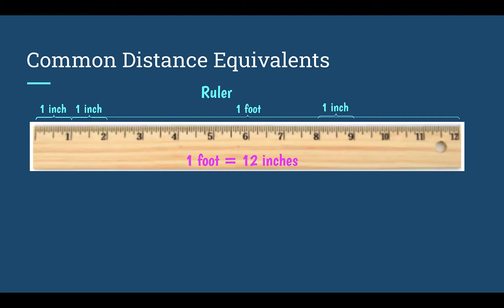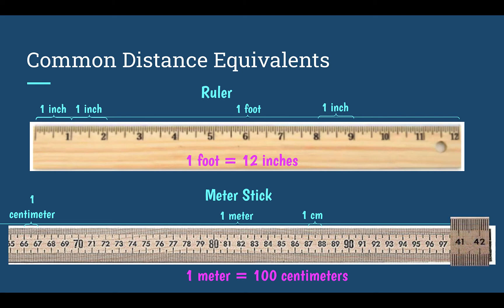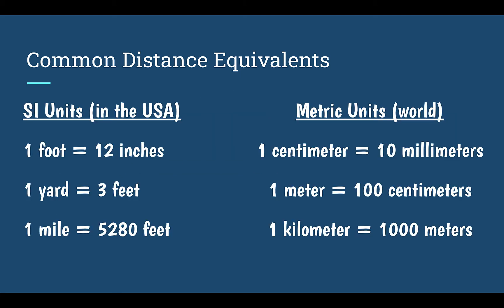We might also need to use a meter stick. A meter stick is one meter long. Within the meter there are smaller sections called centimeters — there are 100 centimeters in one meter. Looking even closer, within a centimeter there are smaller lines called millimeters. There are 10 millimeters in one centimeter.